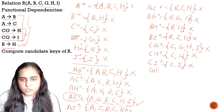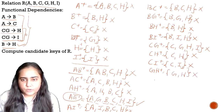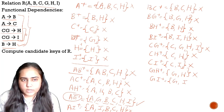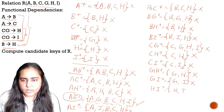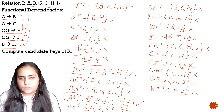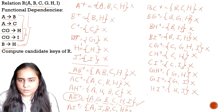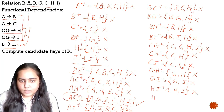Then we can check G. GH-plus is equal to G and H — nothing else can be added, not a candidate key. And finally HI-plus, which is equal to H and I, but nothing else can be added — this is not a candidate key either.